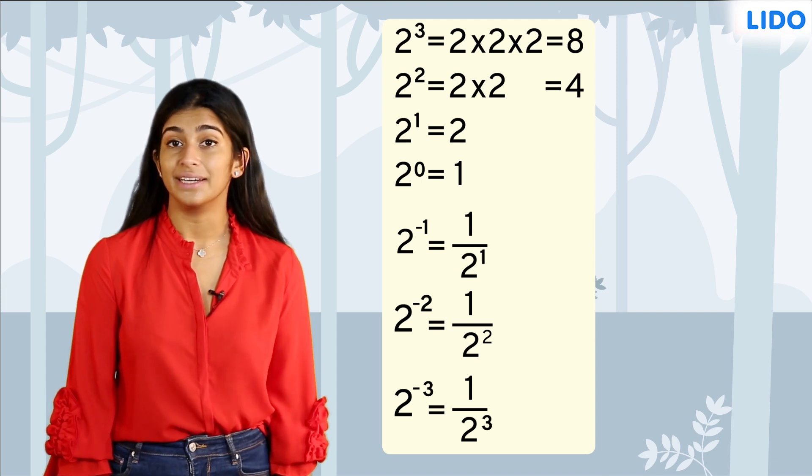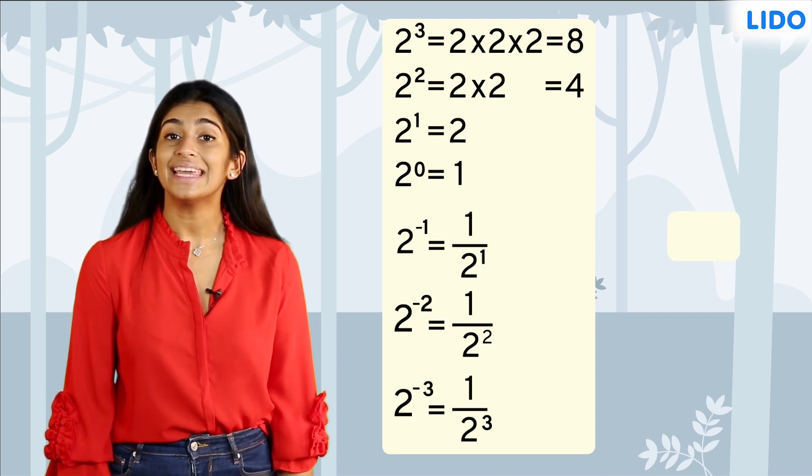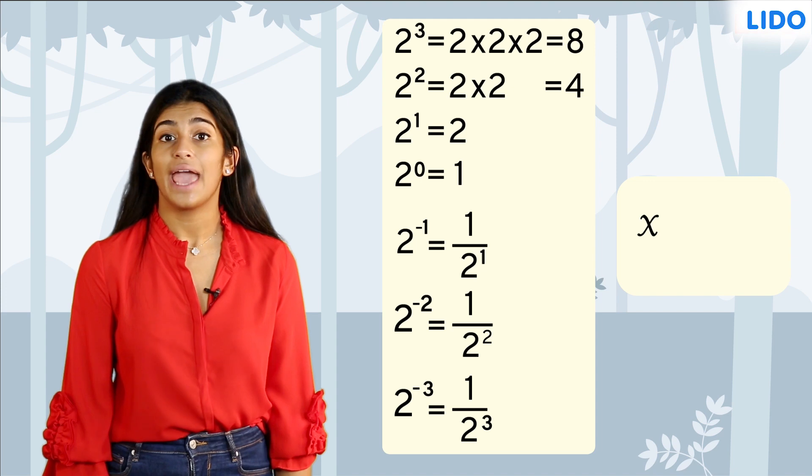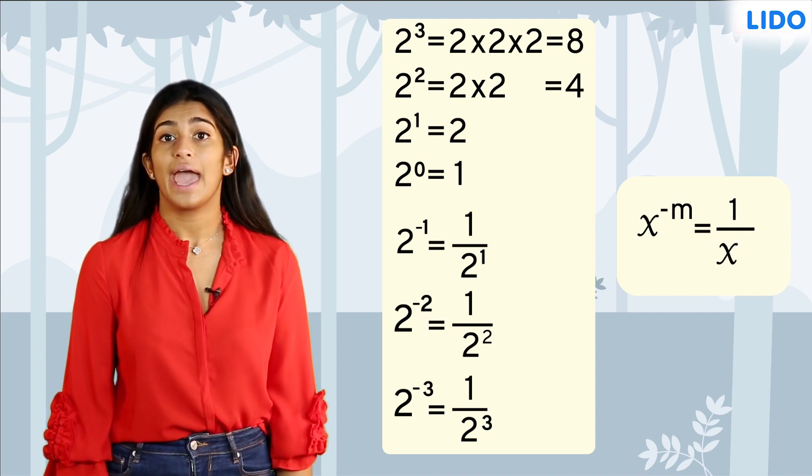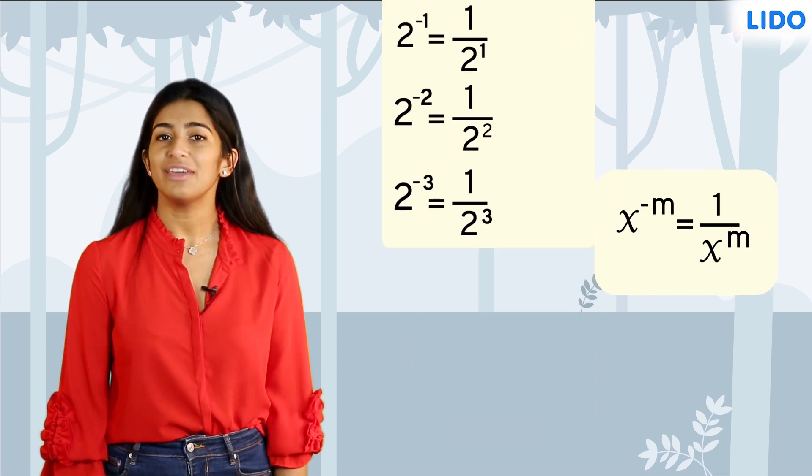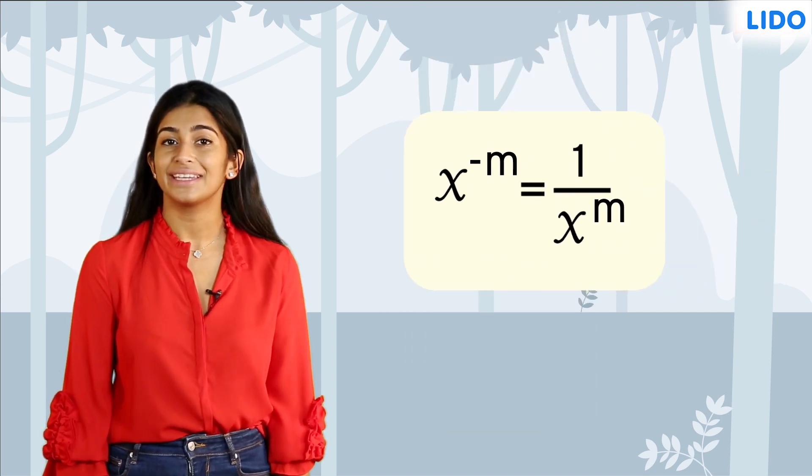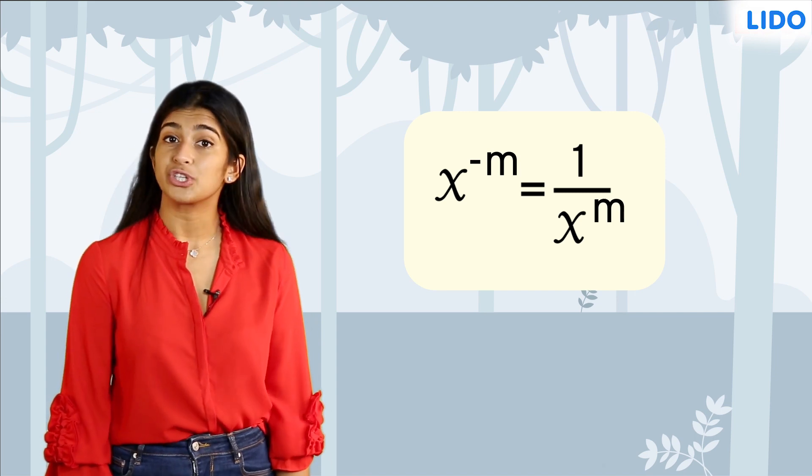If we generalize this pattern, we can conclude that any integer x raised to the exponent negative m is equal to 1 over that x raised to the exponent m. If you noticed, we changed the negative to positive and multiplication to division.